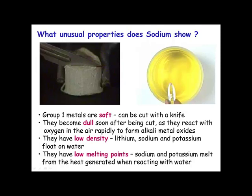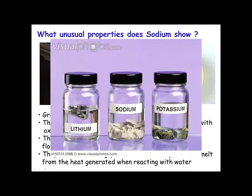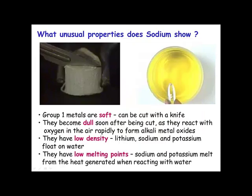Group 1 metals are very reactive, so we have to store them under oil. By storing them under oil, we prevent them from getting access to oxygen in the air and also water, and therefore we can keep them for a long time in the oil.